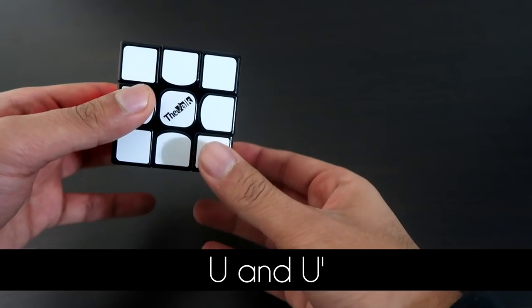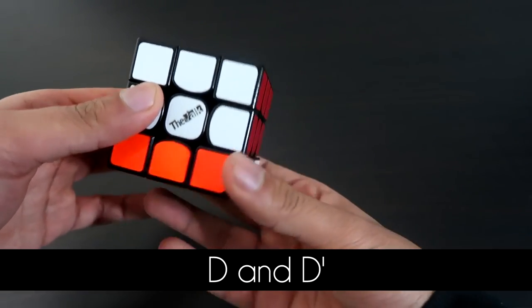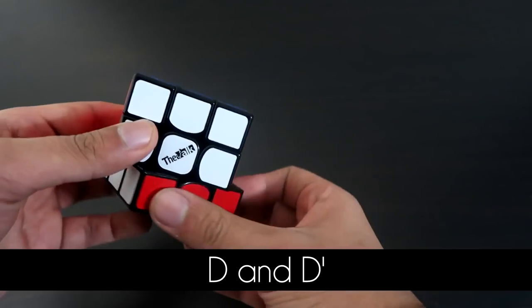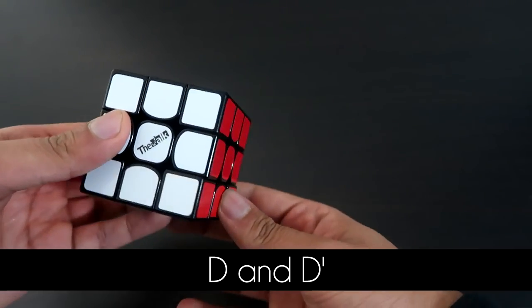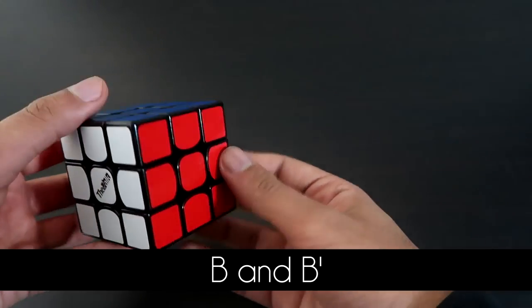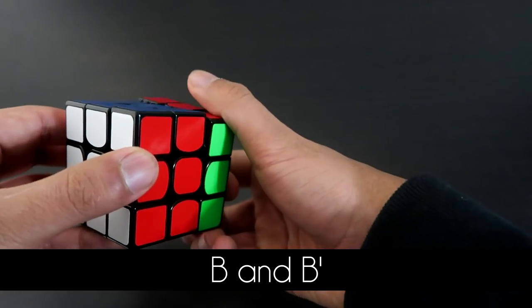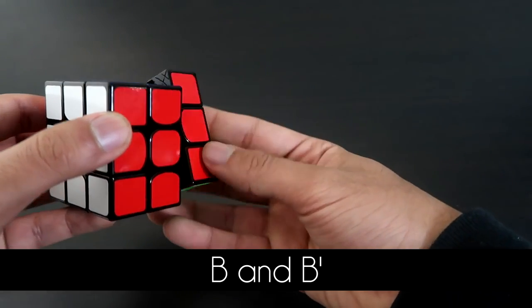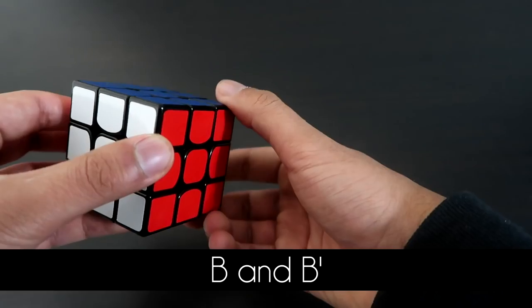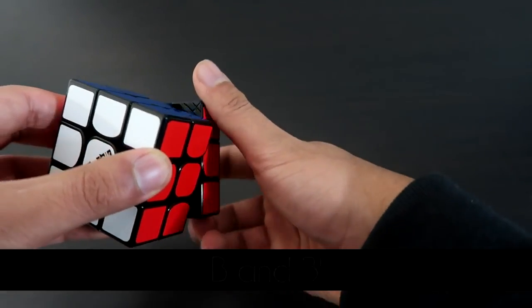Now this is going to be down, and then the prime version is going to be down prime which moves to the left. And then finally we have the back side, so this is back and this is back prime. As you can always see, the main side moves to the right and the prime side always moves to the left.